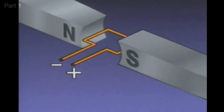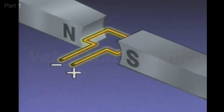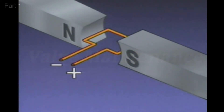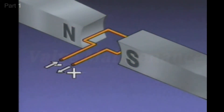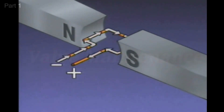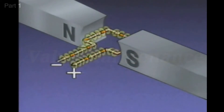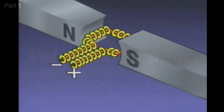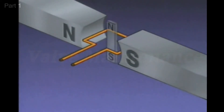We can use this simplified illustration to see how motor action occurs in a DC motor. The rotating part of a DC motor, called the armature, is represented by a loop of wire. The loop of wire is positioned in the magnetic field created by two permanent magnets. The loop is connected to a DC power source, which is not shown. As current flows from the negative side of the DC power source through the loop to the positive side, it produces a magnetic field around the wire. The poles of this magnetic field are perpendicular to the loop — the north pole is here, and the south pole is here.